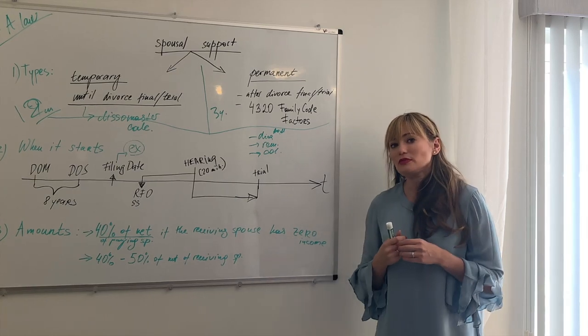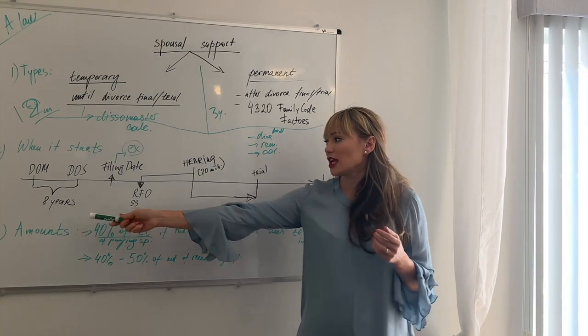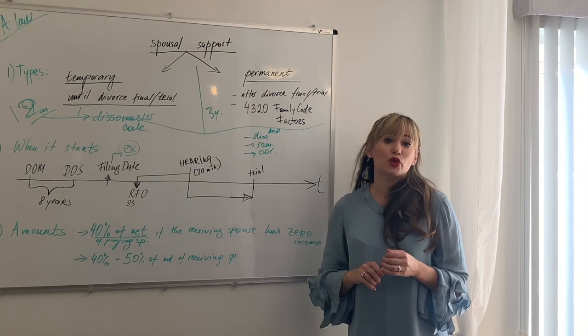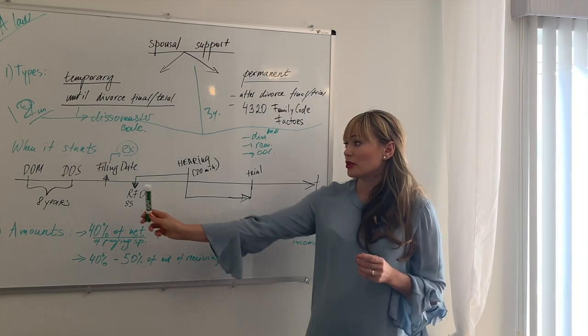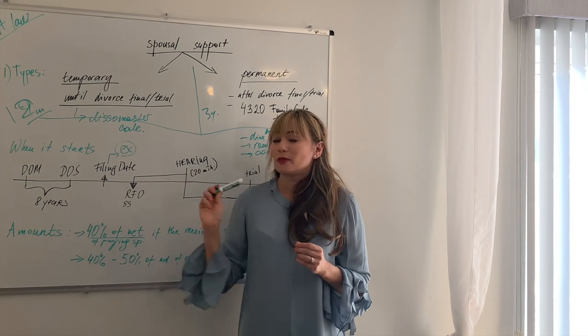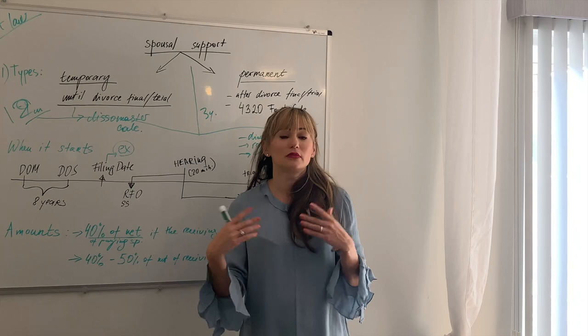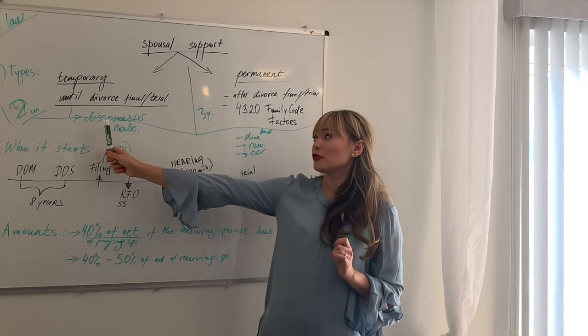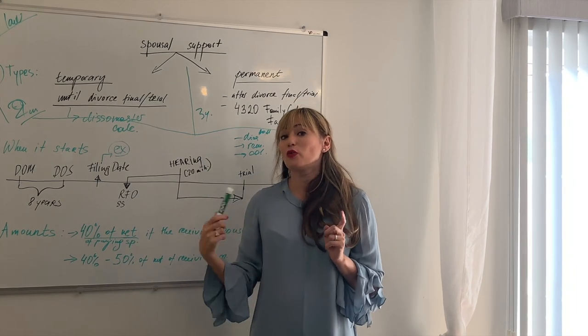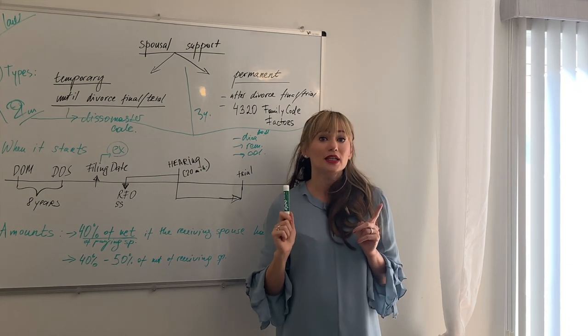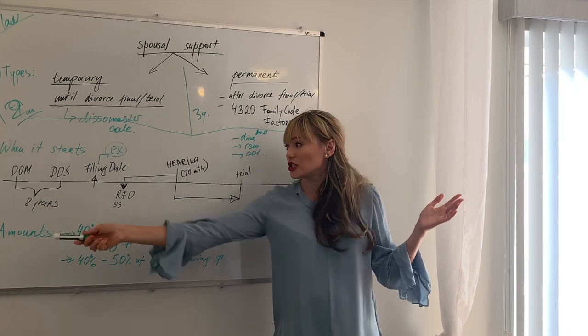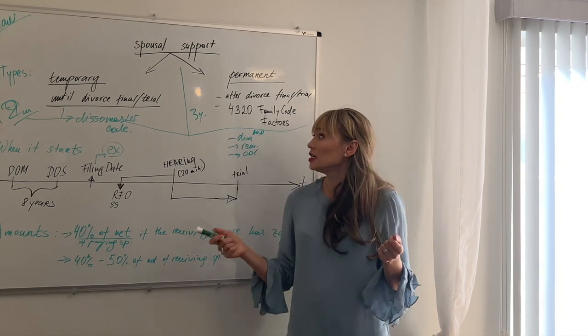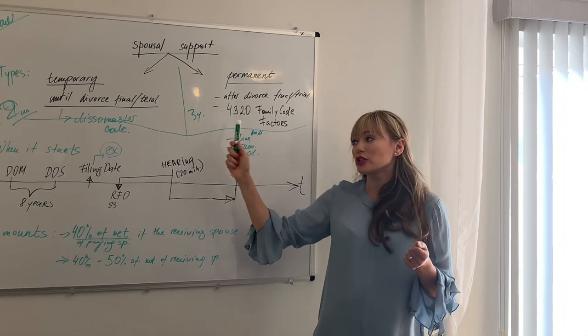So give you an extreme example. Let's say we established the DissoMaster calculator. The party was married eight years and the paying party was during the marriage earning about a hundred thousand dollars and the receiving party was earning zero. And then after the separation, after the date of separation, the paying party started to receive a million dollars in income. I don't know why, just let's assume for the purposes of this conversation. For the calculation of DissoMaster, the million dollars of income would go into consideration, but not for permanent. Because why? We established that during the marriage and during the eight years, he or she has been earning only a hundred thousand dollars. So that means that standard of living was never a million dollars. So therefore this number is going to be way lower than this number.